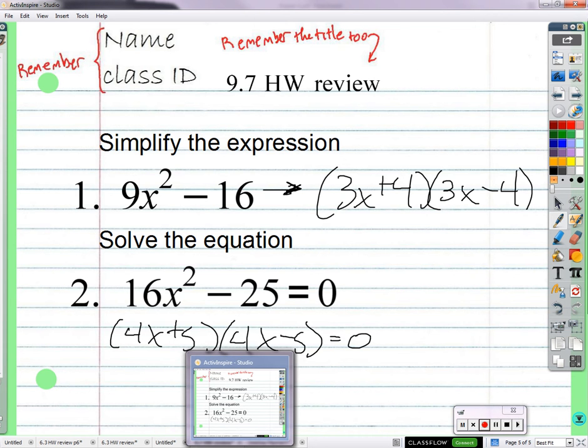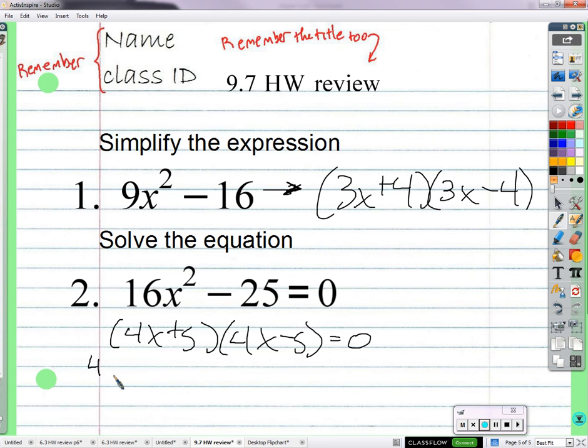We have two things multiplied together, giving us 0. One of them has to be 0. So we set up those two equations. Either 4x plus 5 equals 0, or 4x minus 5 equals 0. Subtract 5 and divide by 4, we get negative 5 fourths. Add 5 and divide by 4, we get positive 5 fourths. So we have the difference of squares. From the answer key of this problem, we always get this plus and minus version of the same answer. Plus 5 fourths, negative 5 fourths.